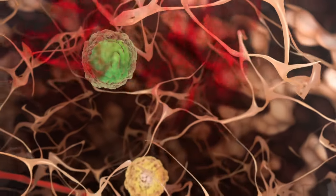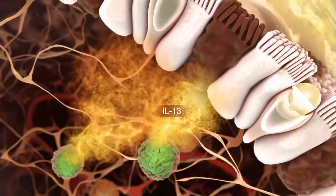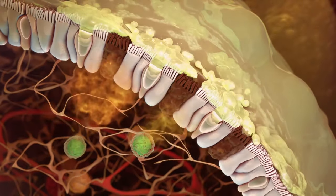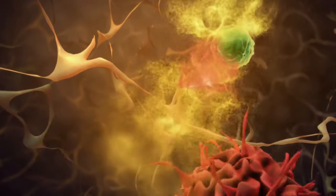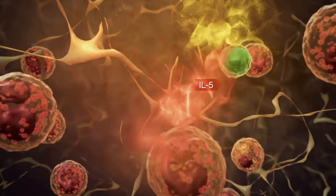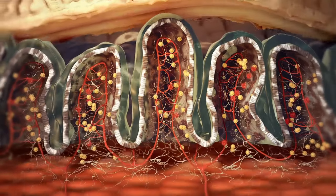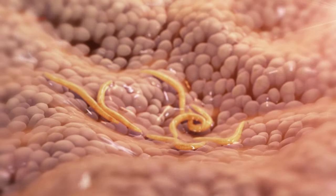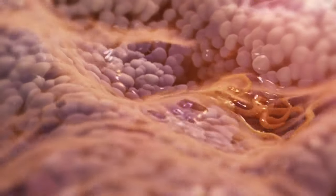In response to the alarmin IL-25, ILC2s make mediators that induce mucus production from goblet cells, send activated dendritic cells to the lymph node where they can prime T-cell effectors, recruit eosinophils and mast cells, and induce muscle contraction. These actions result in the expulsion of worms from the gut.